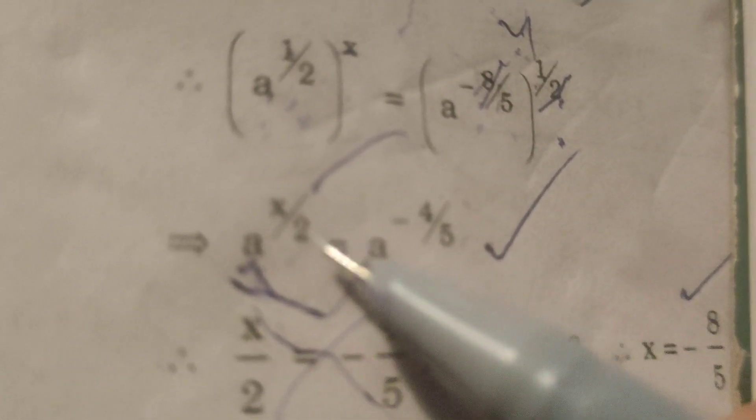Here bases are equal, so by the rule of powers are equal. Now using that rule, x by 2 equals to minus 4 by 5.